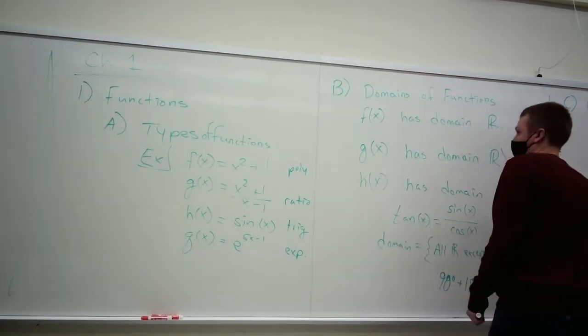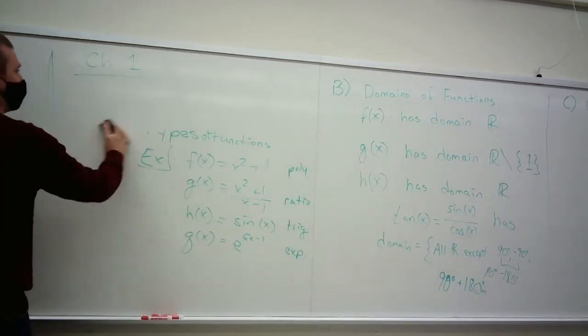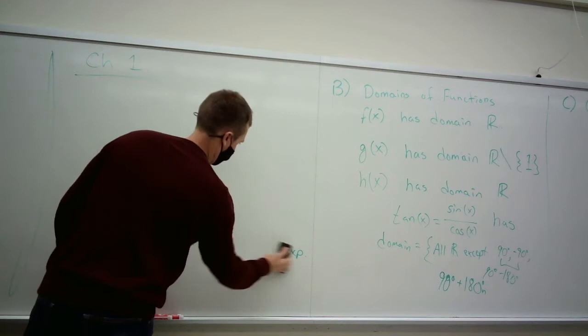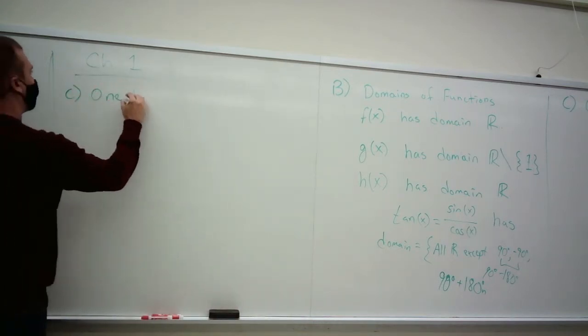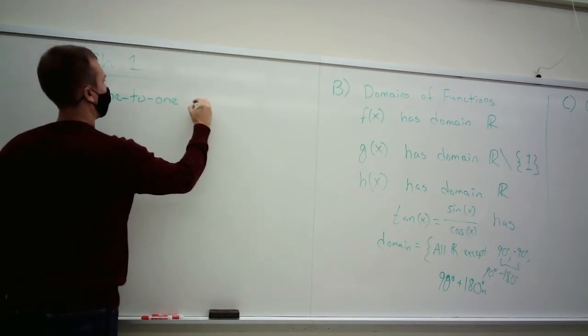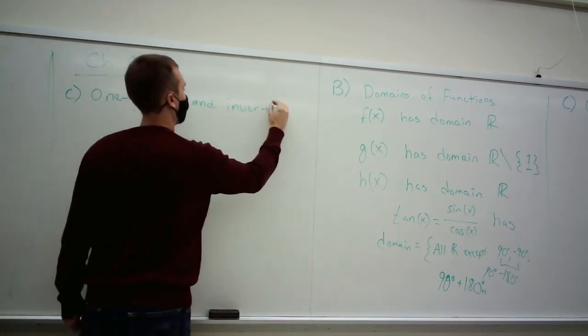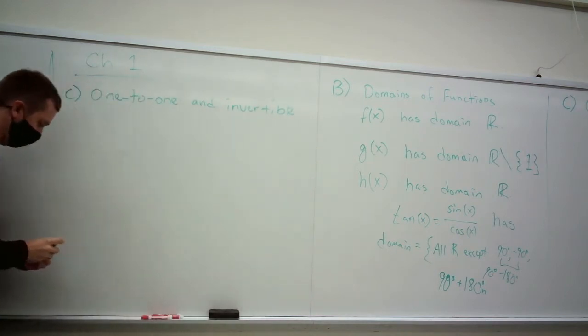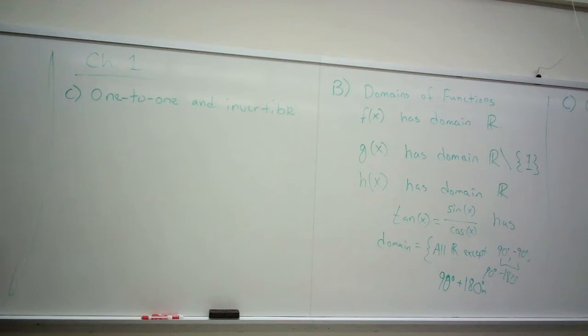We talked a little bit about one-to-one functions and functions which have inverses. There was a really nice test to determine if something's a function. Maybe the fact that I forgot it means something. But there's a really nice test for one-to-one functions. To determine if a function is one-to-one, or really to test if it has a functional inverse, what's the test you use?